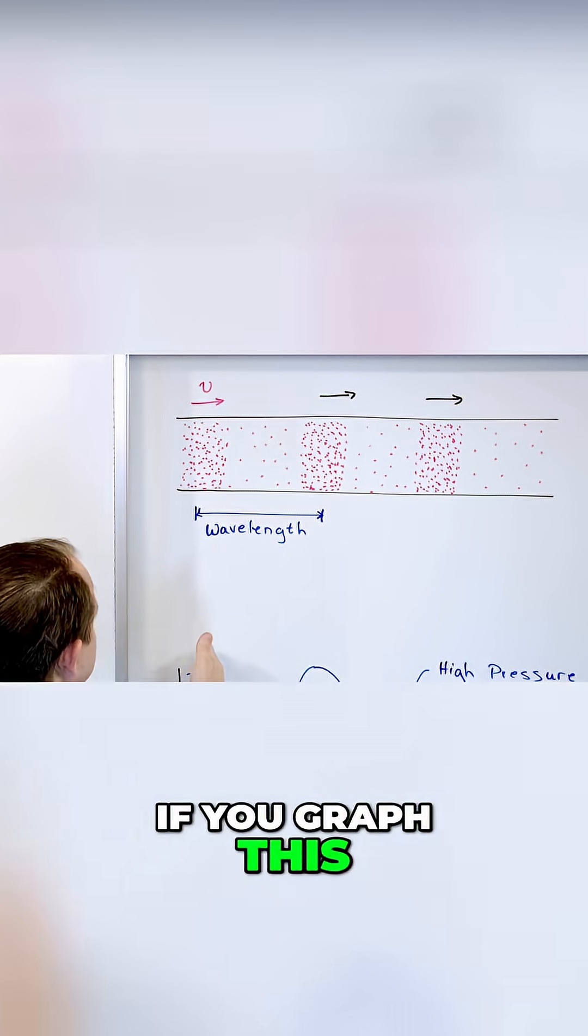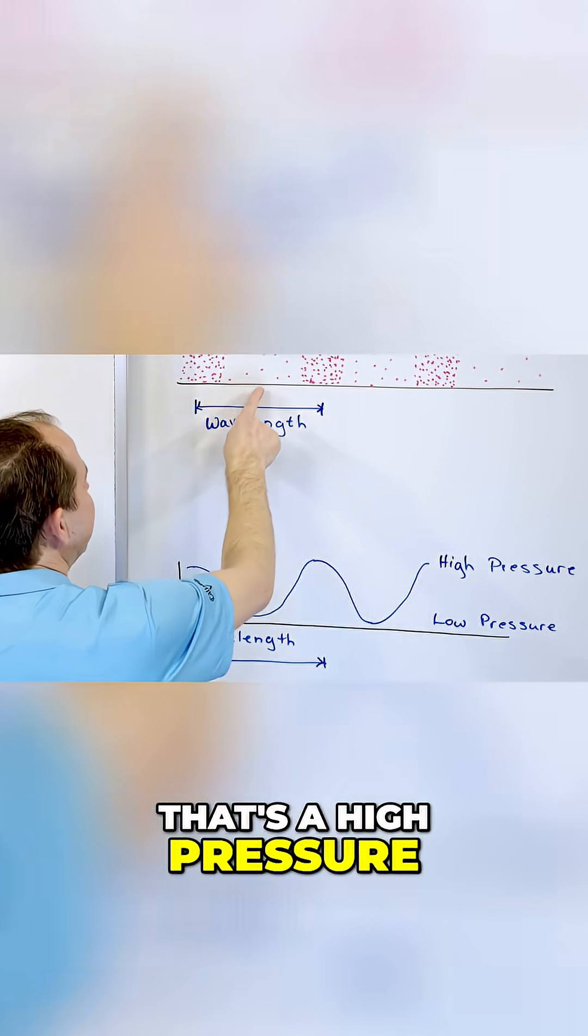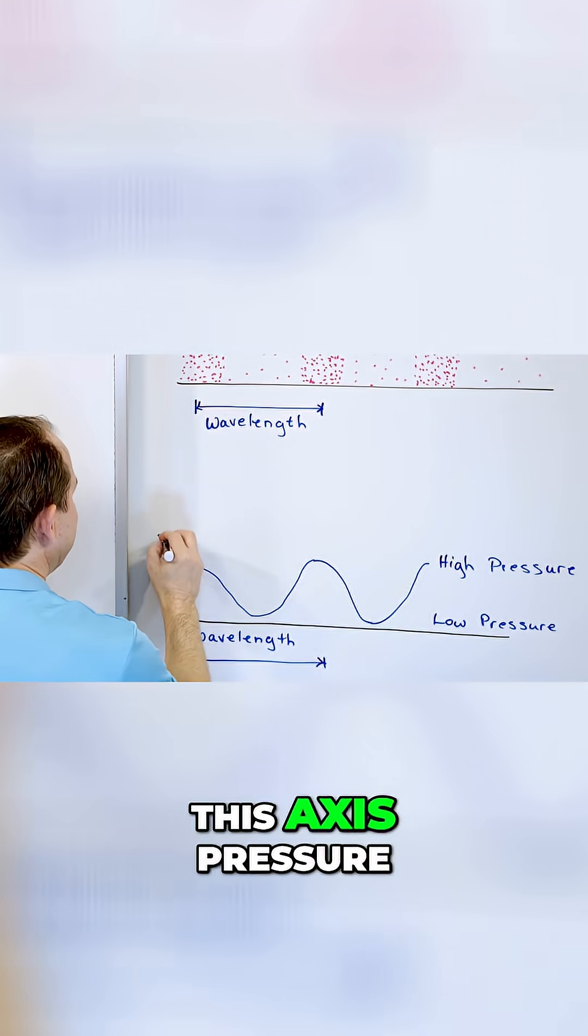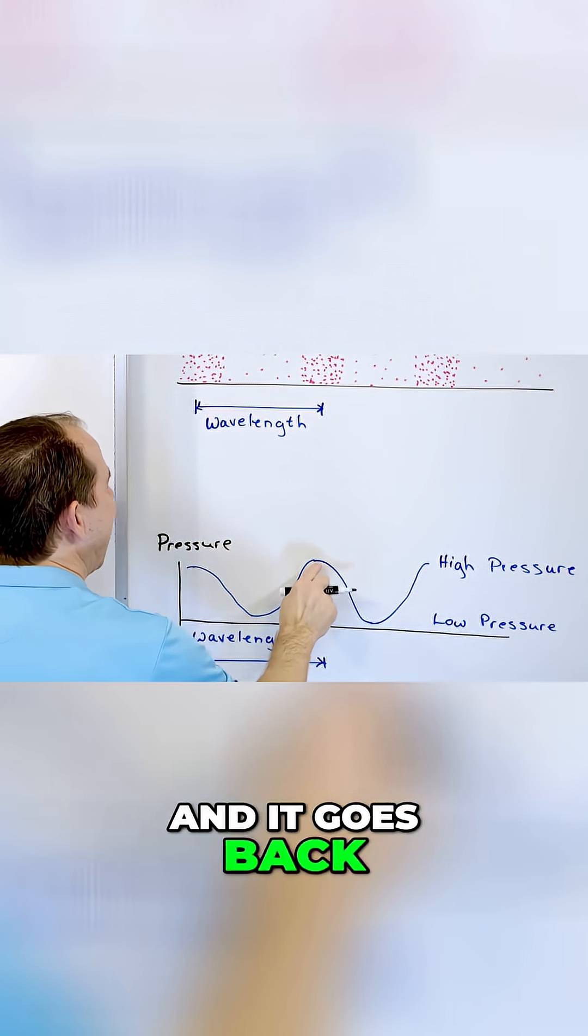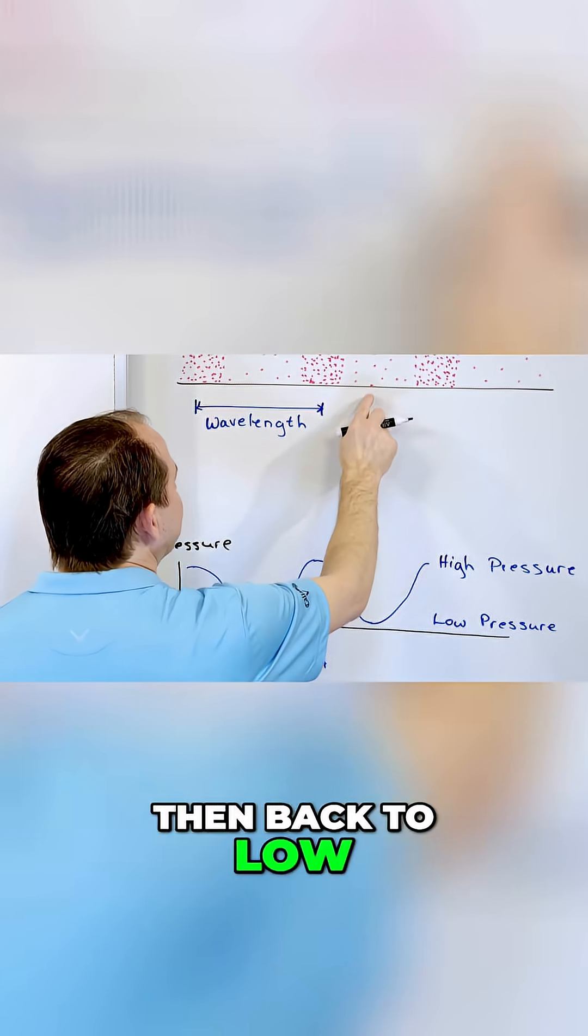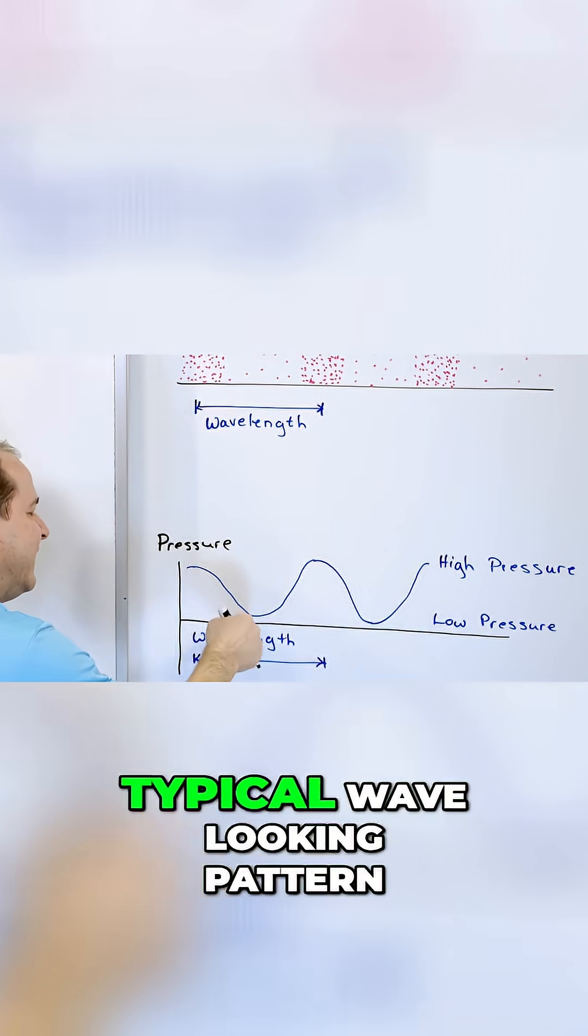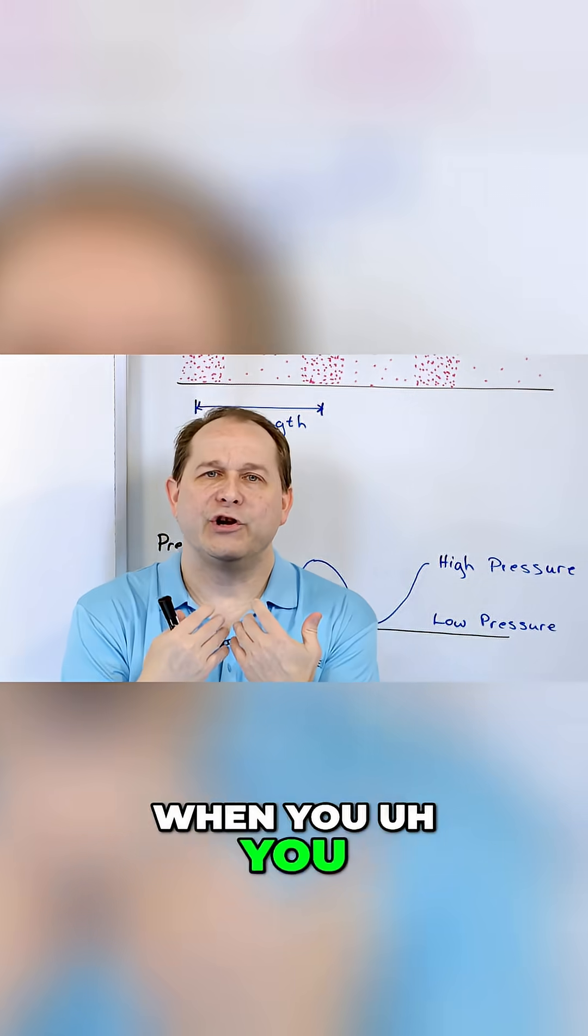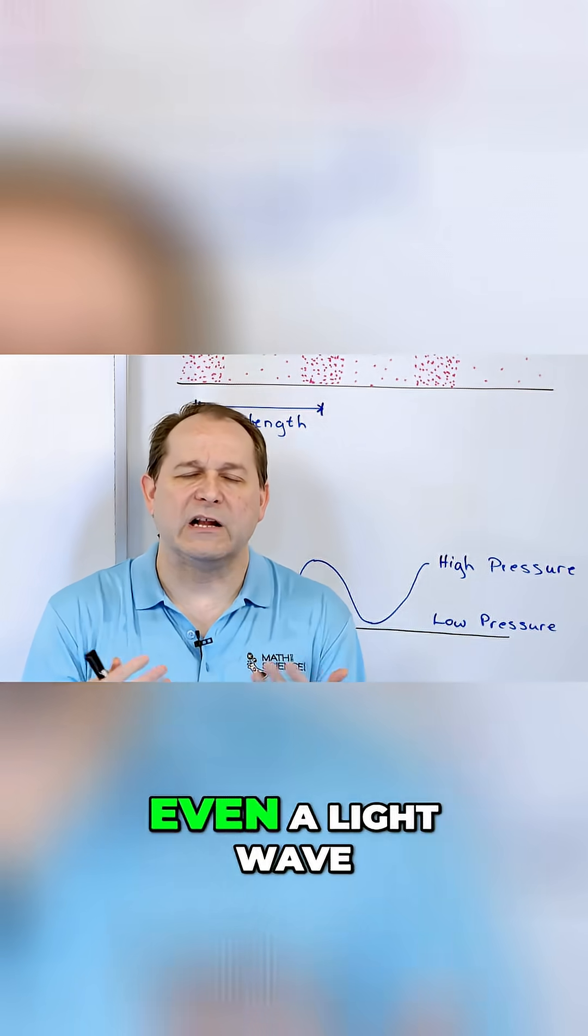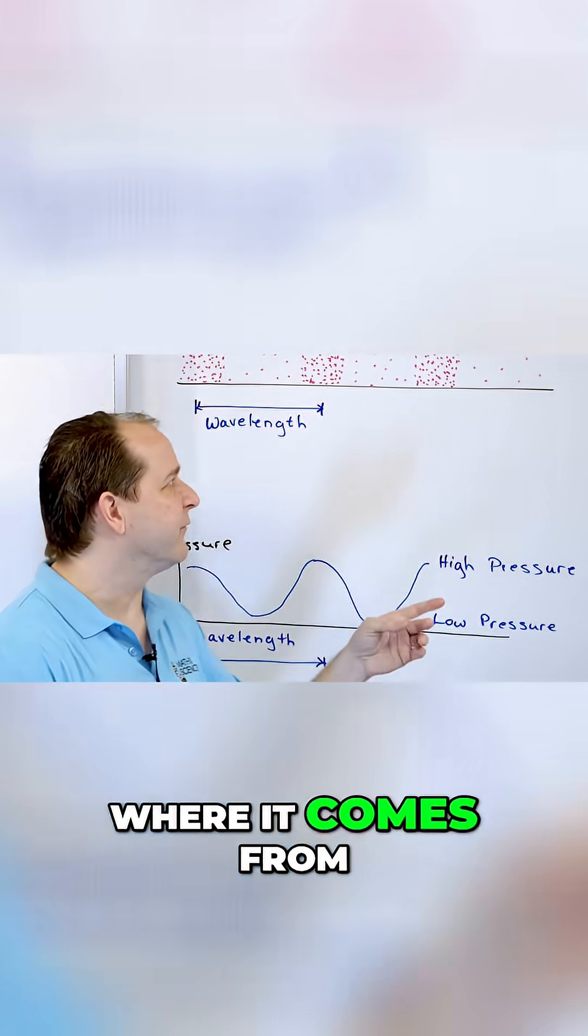Now if you graph this, you can say that this is high pressure. You can graph this on a graph and you can say well that's a high pressure, this is a lower pressure, so you can label this axis pressure. And it goes back to high pressure and then back to low pressure and then back to high pressure again. Then you can connect them in a smooth curve and get that typical wave looking pattern that we always see when you see a sound wave or even a light wave or a water wave represented as a wave. You see the crest and the troughs, that's where it comes from.